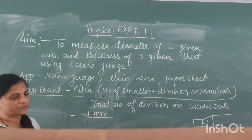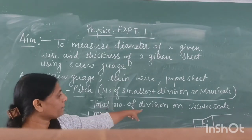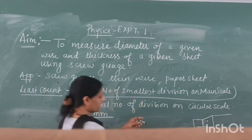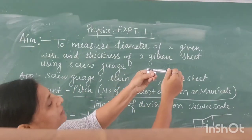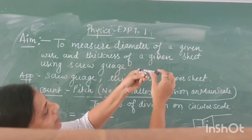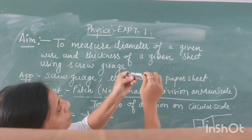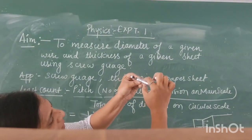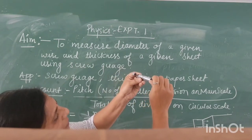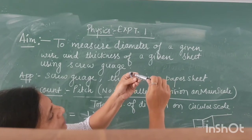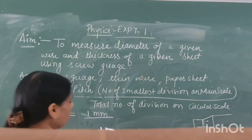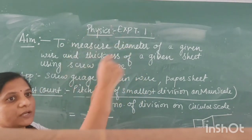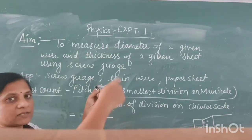So 1 millimeter is the smallest division on the main scale. Now we divide it by the total number of divisions on the circular scale. The circular scale has readings — 0, 10, 20 — in between 0 to 10 there are 10 lines, and in between 10 to 20 again there are 10 lines. So the complete circular scale has 100 divisions. The circular scale is measured only in divisions.